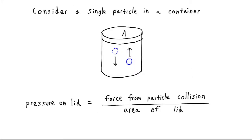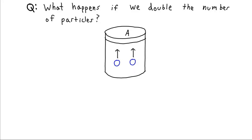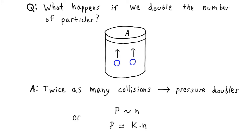To understand how pressure applies to an ideal gas, let's consider a simple scenario where we have a container with a lid of area A and just a single particle in the container. This particle collides with the lid, then bounces back the other direction, and just keeps bouncing back and forth. The pressure on this lid is going to be the force from that collision divided by the area of the lid. If we instead have two particles, we double the number of collisions, so we double the force and therefore double the pressure.